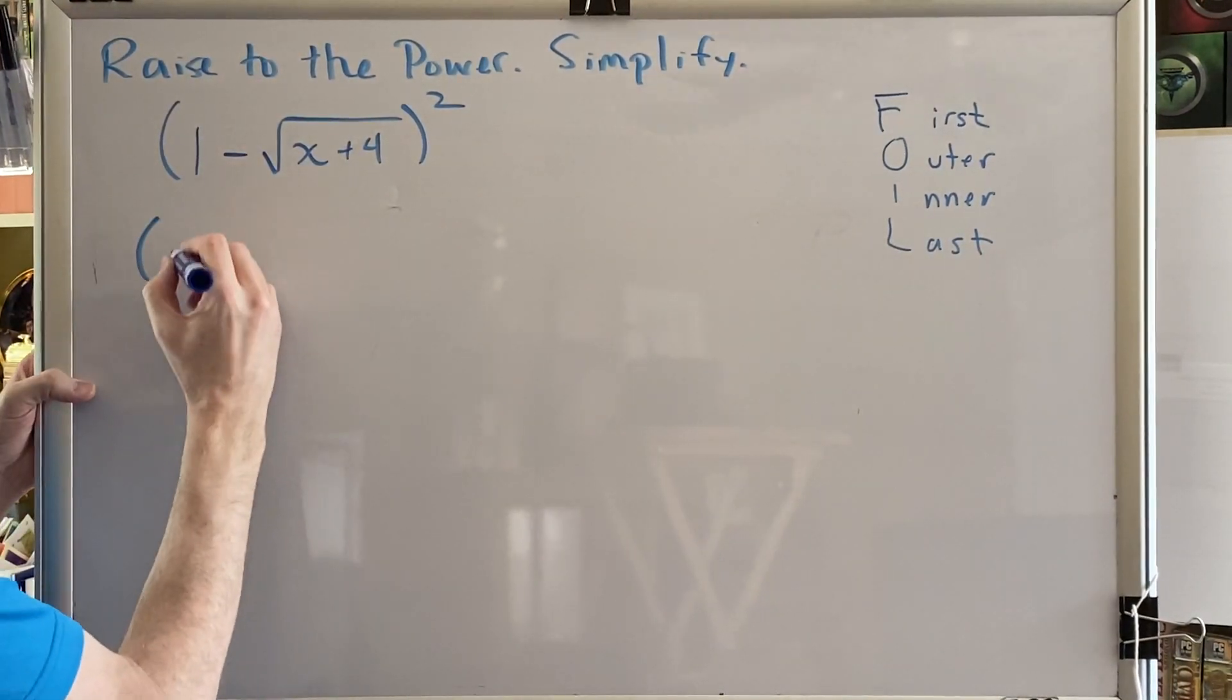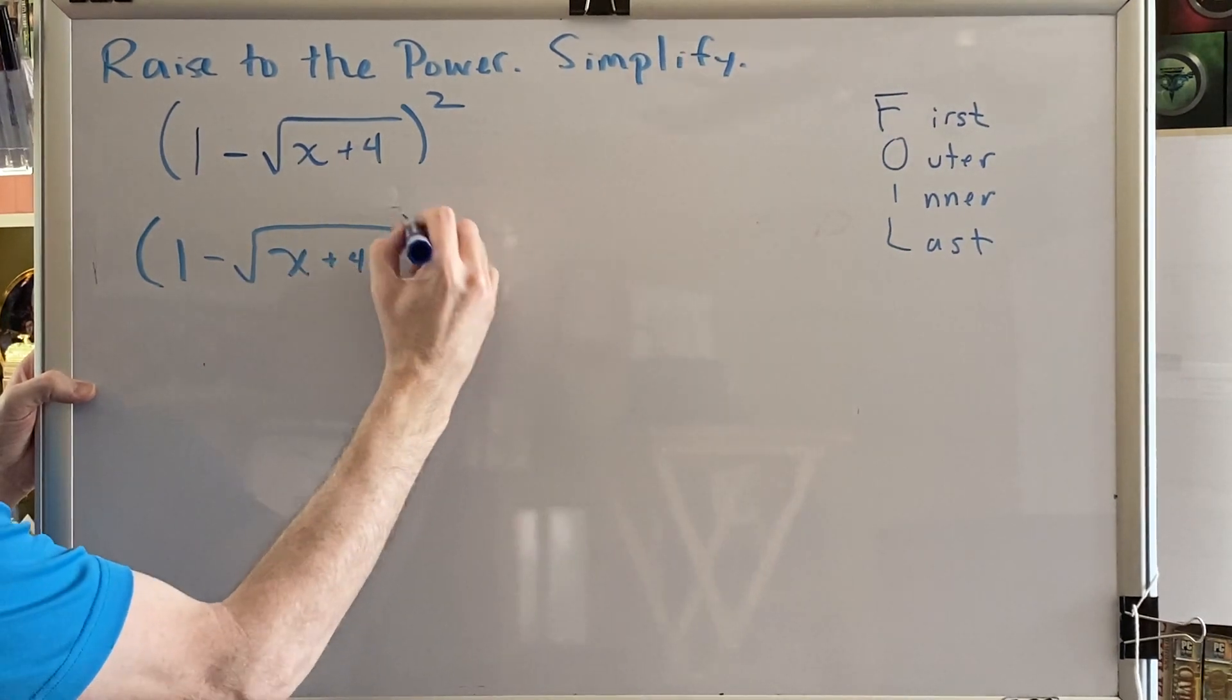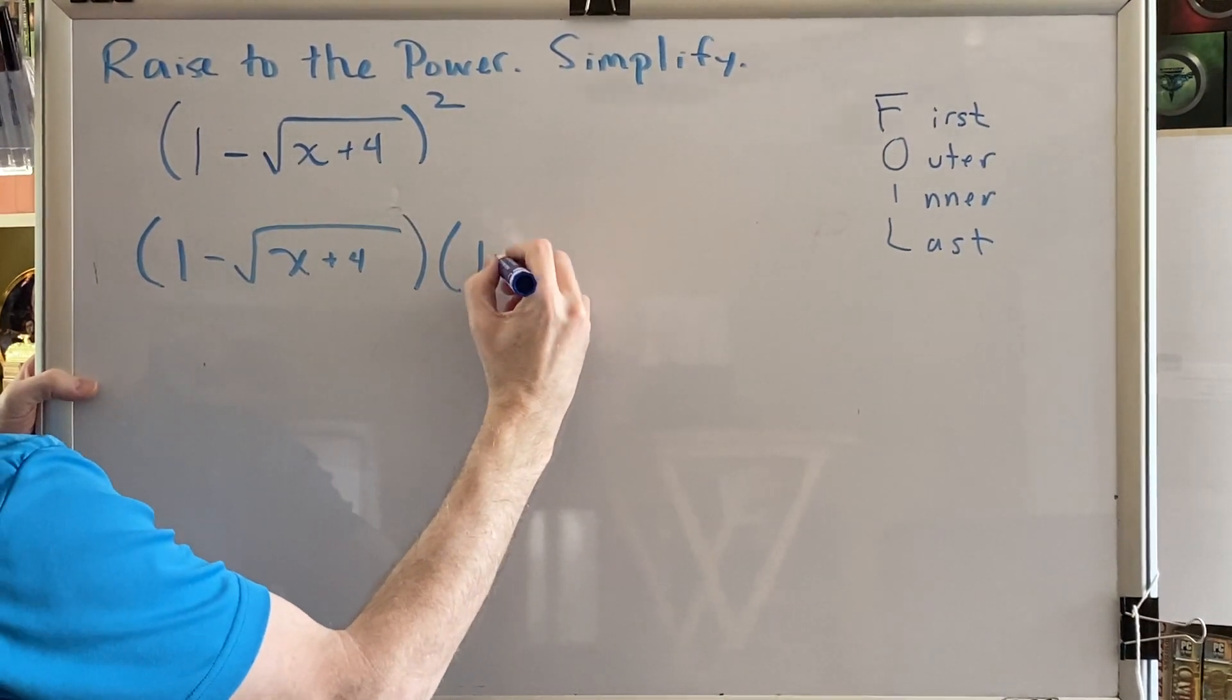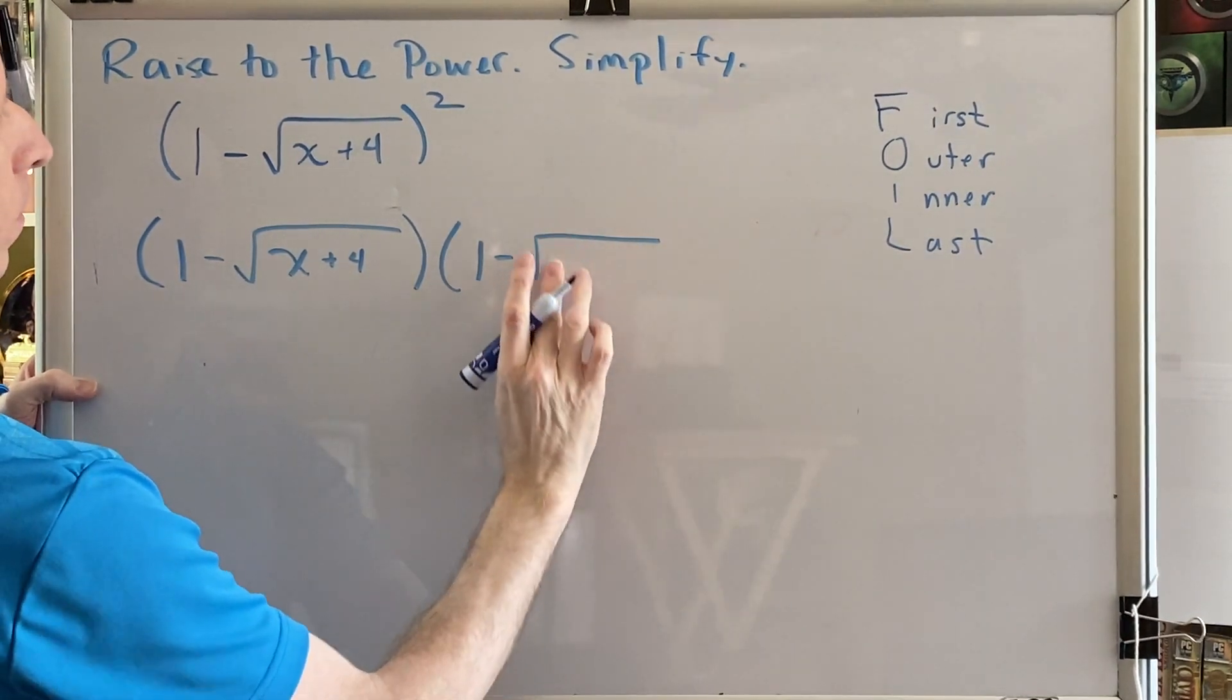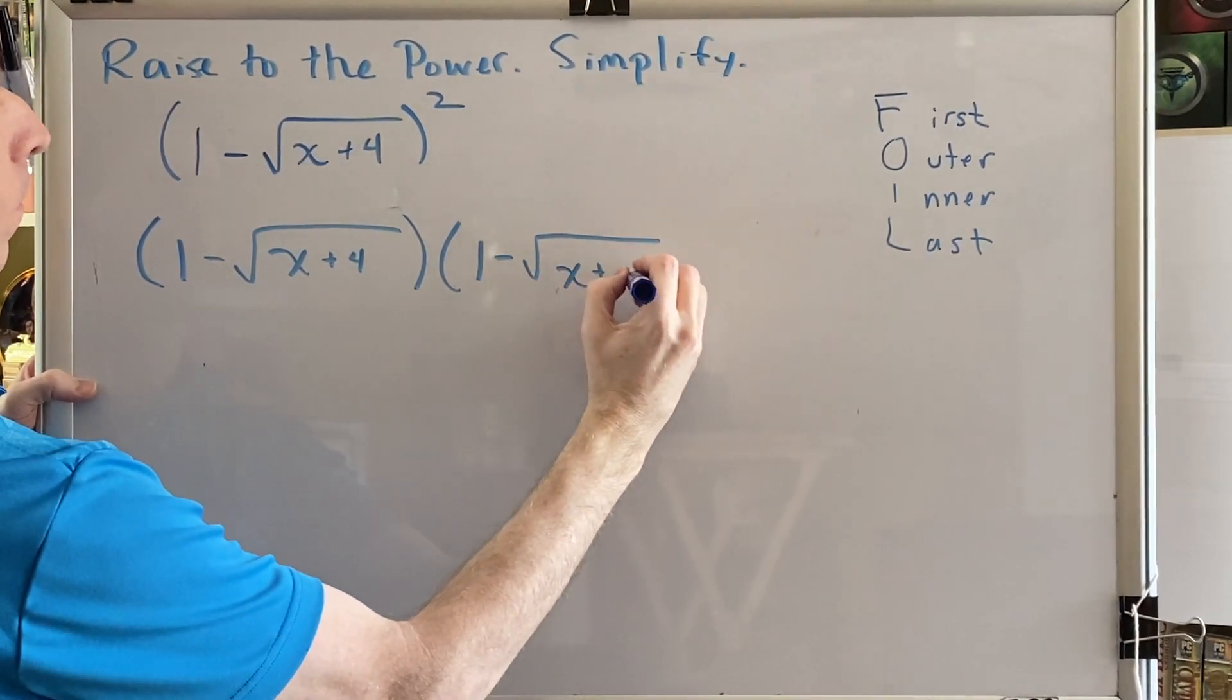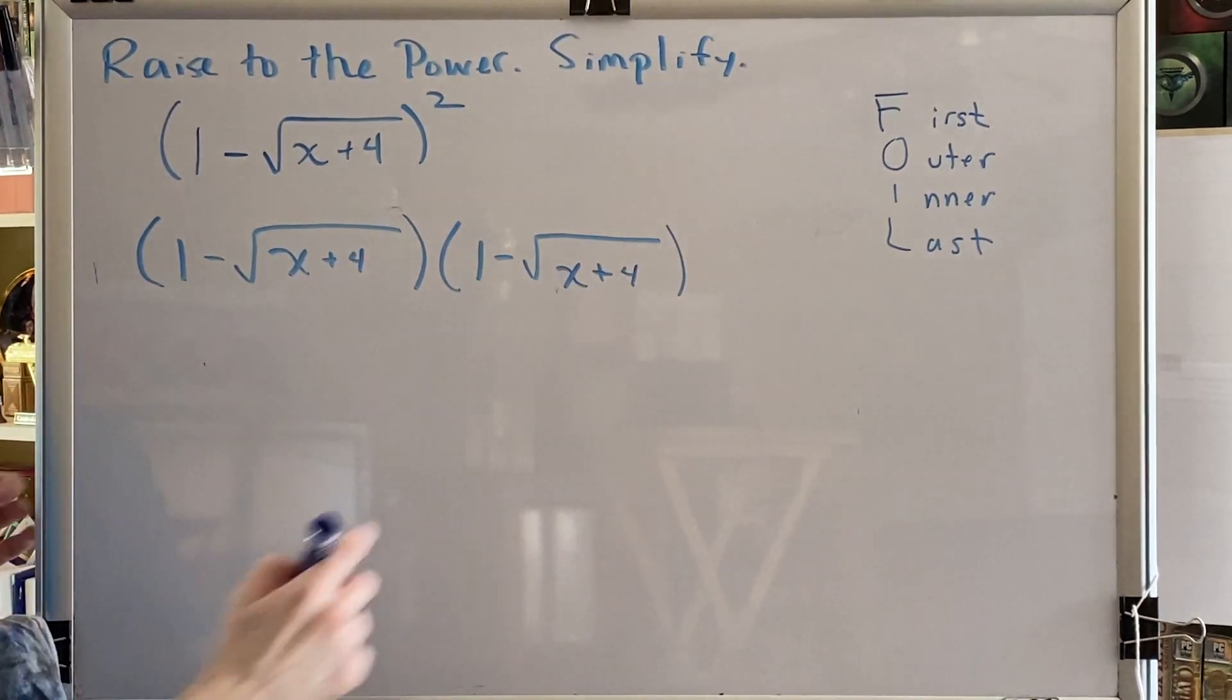So we're going to rewrite this as 1 minus the square root of the sum x plus 4, all in parentheses, times another copy of that same thing. Okay, now we perform the FOIL multiplication method.